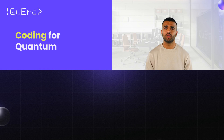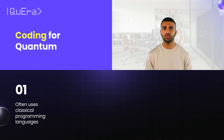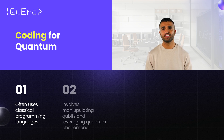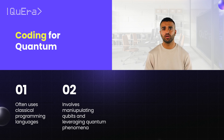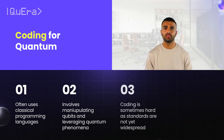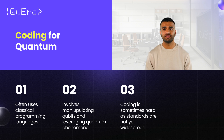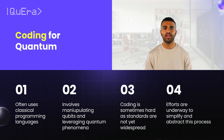In summary, coding for quantum refers to programming quantum computers, often using classical programming languages. Unlike classical coding, quantum coding involves manipulating qubits and leveraging quantum phenomena like superposition and entanglement. While quantum computing offers exciting possibilities for solving complex problems, we currently face challenges such as a lack of standardization and methods to program computers with a large number of qubits. Several efforts are underway to make coding for quantum easier and more accessible.